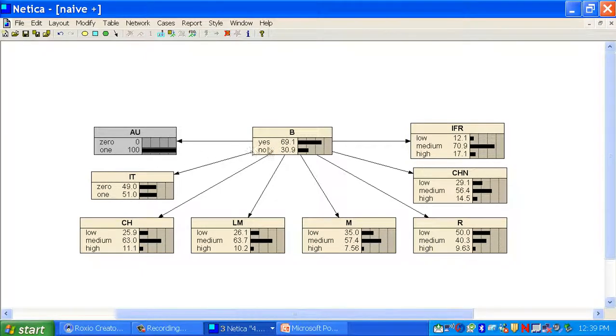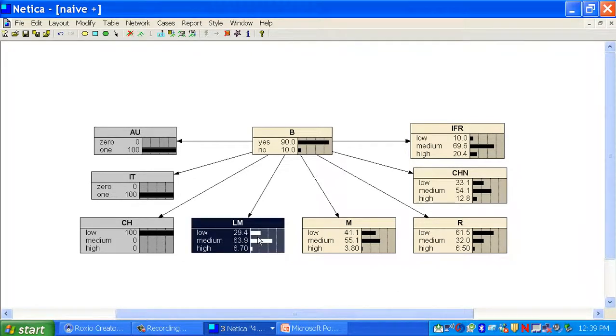Again, you can look at the references to see what these variables stand for. But let's say this becomes zero. Bankruptcy became improbable. It becomes one. It becomes more probable. Less probable, more probable. Not much change. More probable. More probable.